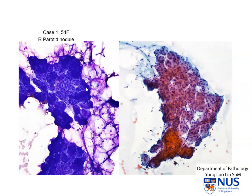Here we can see very prominent adipose stroma and these very well-formed bunch-of-grapes-like acinar structures. And again in this instance, there also happens to be a duct. So if the history is that of a discrete nodule, this would actually have to be diagnosed as non-diagnostic in the Milan system, because this does not explain a discrete or well-defined mass.